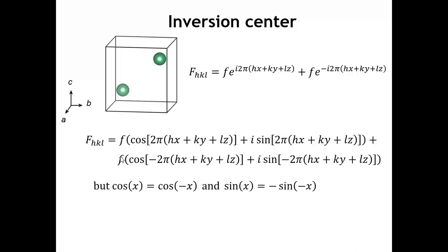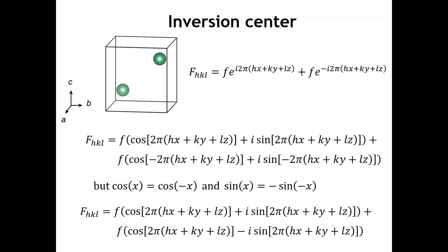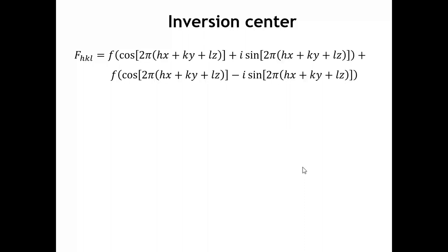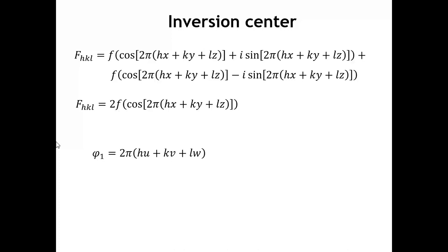Cosine of some angle equals cosine of the negative of that angle, but sine x equals minus sine of minus x. Using those relationships, we can write everything so that the cosine and sine arguments are all the same. When we add everything up, the sine terms cancel, and we are left with only a cosine term. This always happens when we have a pair of atoms related by an inversion center.